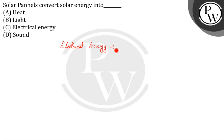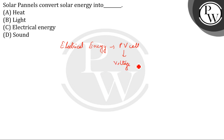This occurs by the phenomenon of the photovoltaic effect. The photovoltaic effect is the generation of voltage and electric current in a material upon exposure to light. So it is both a physical and a chemical phenomenon.